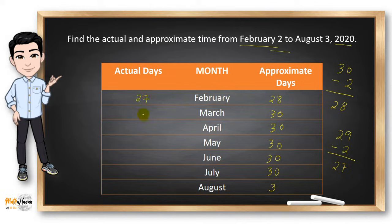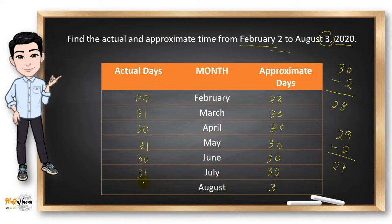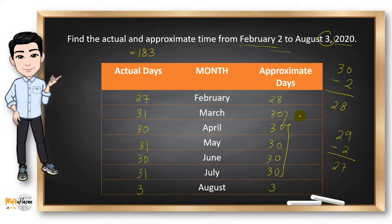March has 31 days, April has 30, May has 31, June has 30, July has 31. August also has 31 days, but since we ended at August 3, we write 3. Adding all values gives 183 for the actual days. For the approximate days, I multiply 30 by the number of 30s in the column — we have 5 of them, so 30 times 5 is 150. Then 28 plus 150 plus 3 gives 181 approximate days.